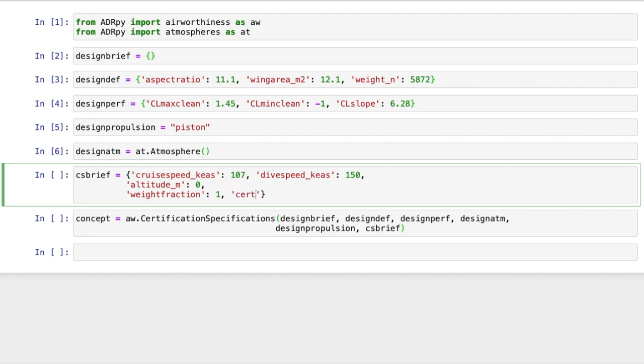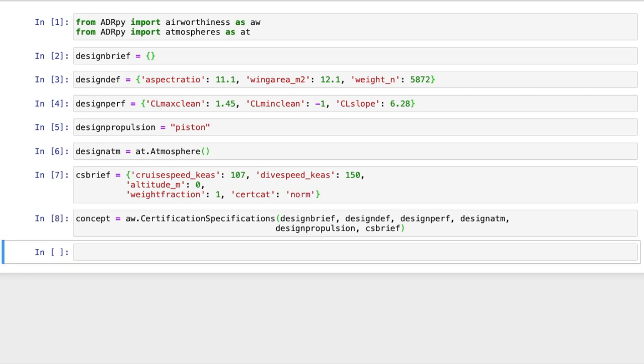We also need to pick a category, certcat, as defined by CS 23. We will use normal in this case, designated by the category identifier norm. The other categories are utility, commuter, and aerobatic.